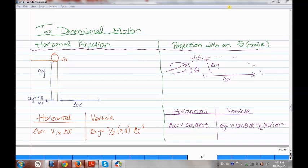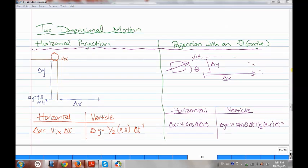I will be explaining the two-dimensional motion. So now we have the horizontal projection and we have the projection with an angle. So let's start with the horizontal projection.